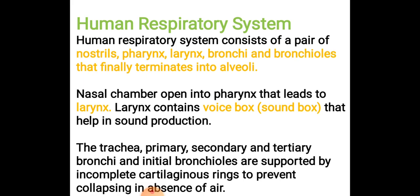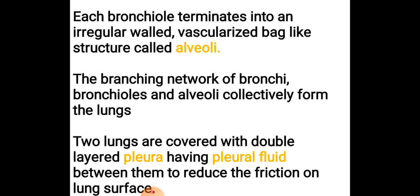The trachea is supported by cartilaginous rings. These rings are present in the trachea to provide support and to prevent it from collapsing. In the absence of air in the trachea, without these rings it would collapse. The rings act as support and give rigid structure.